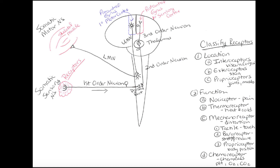The second type is the thermoreceptor, which detects heat and cold — for instance when skin heats up, or when blood temperature changes past the hypothalamus. Interestingly, there are more cold thermoreceptors than there are heat thermoreceptors.